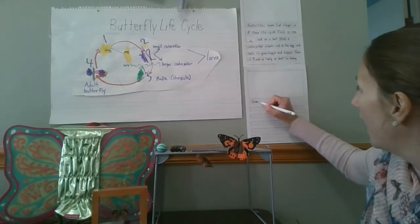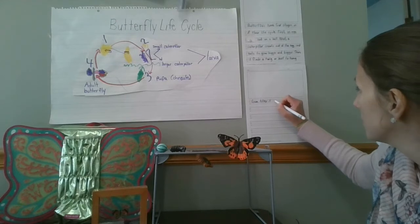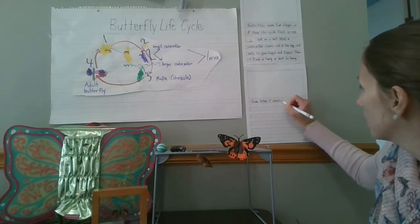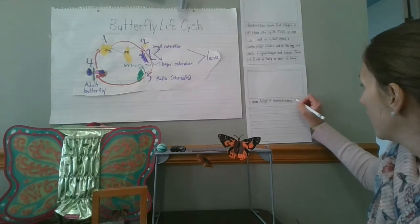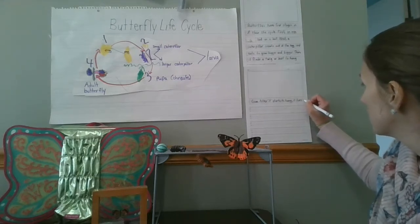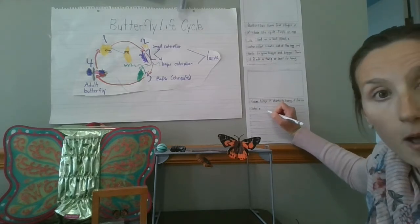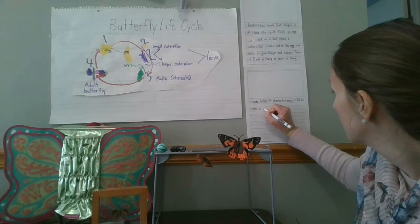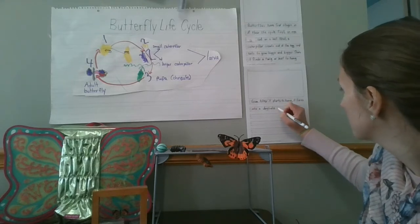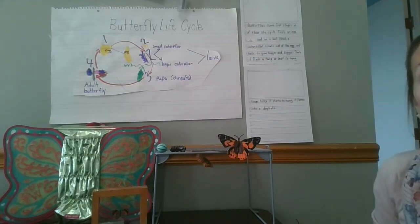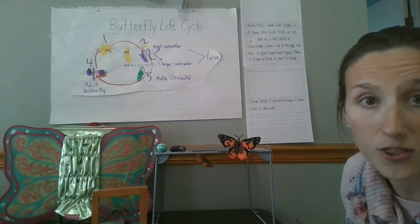After it starts to hang, it turns into a chrysalis. Let me go back to the beginning and reread to make sure it makes sense, because good authors should always do that: 'Butterflies have four stages in their life cycle. First, an egg is laid on a leaf. Next, a caterpillar crawls out of the egg and eats to grow bigger and bigger. Then it finds a twig or leaf to hang from. After it starts to hang, it turns into a chrysalis.'